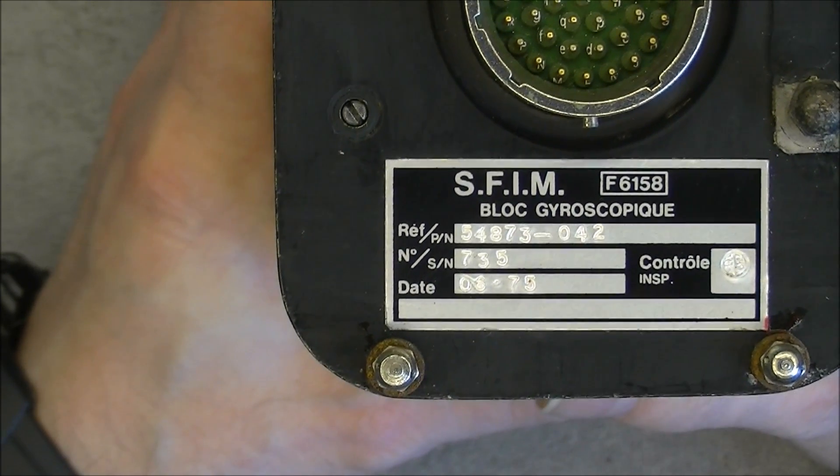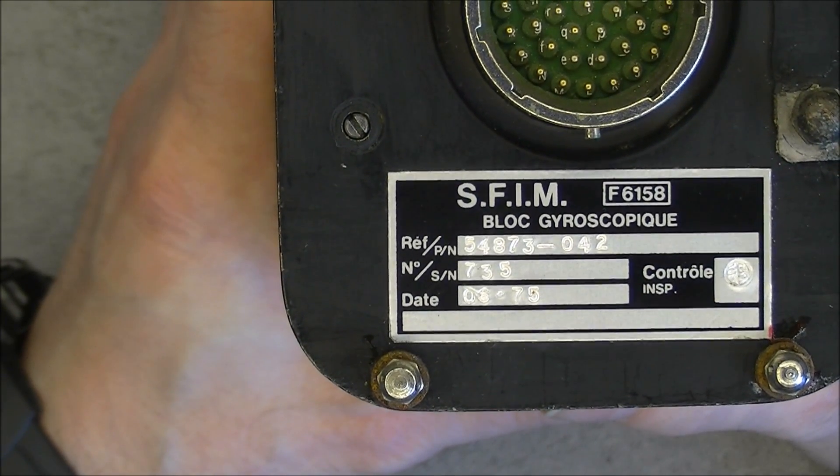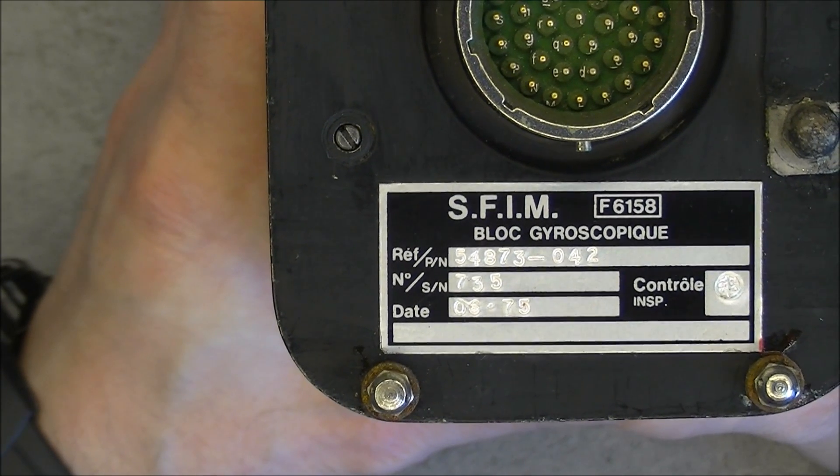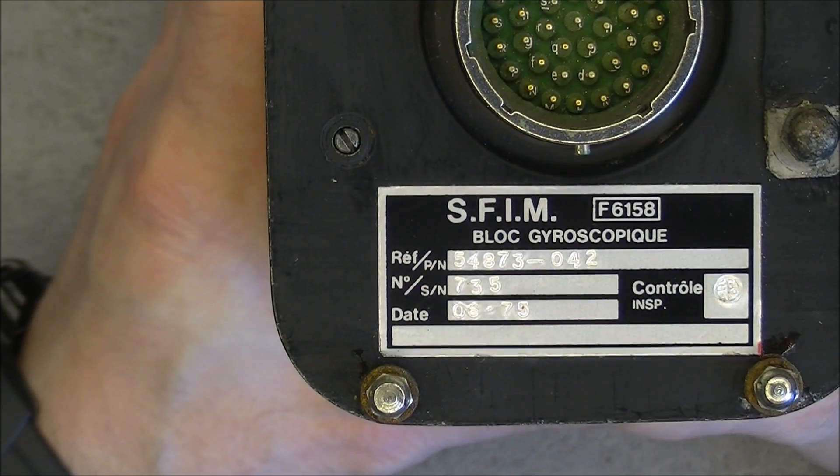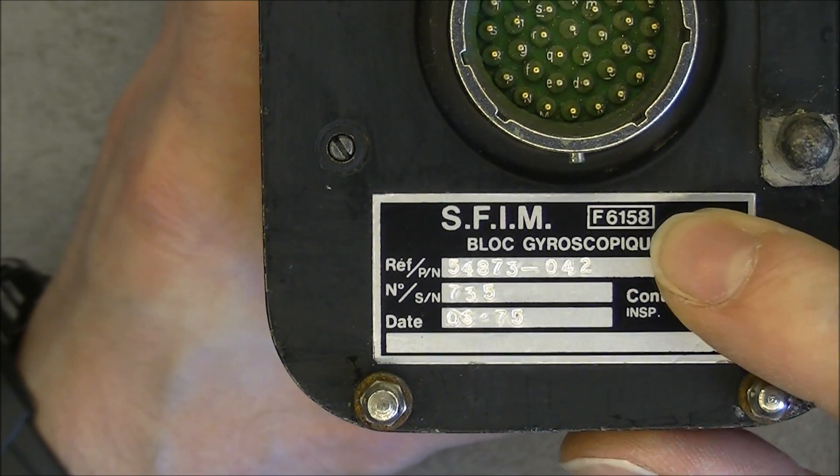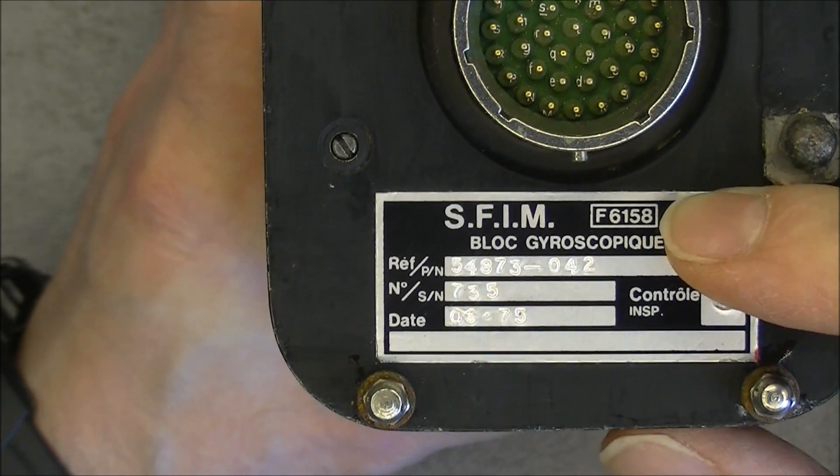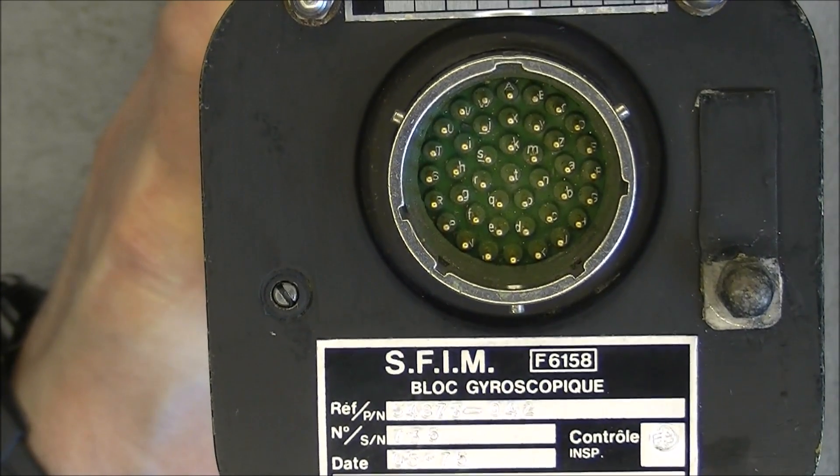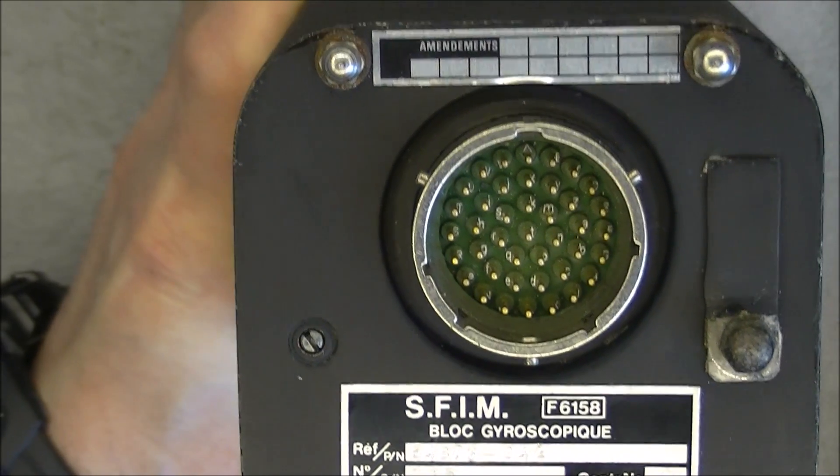Manufacturing date of 1975. Serial number 733. And here is the part number for you. Here is the cage number for the SFIM company. And you can see regular multi-pin connector with golden contacts.